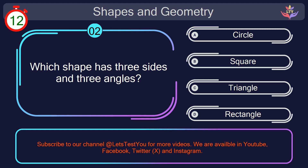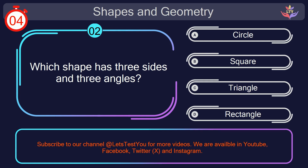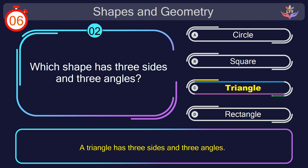Question number 2. Which shape has 3 sides and 3 angles? Your countdown started. 1, here we go. The correct answer is option C. Triangle. A triangle has 3 sides and 3 angles.